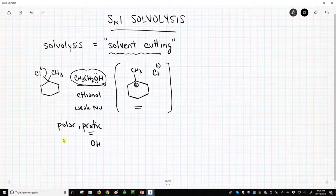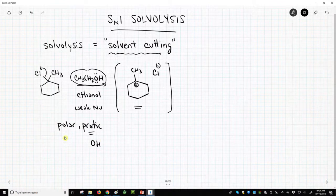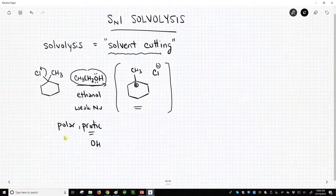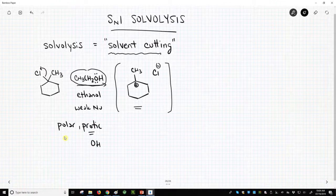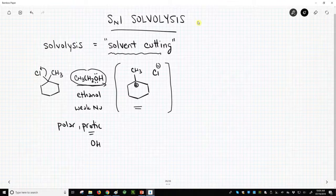and polar because we've got this electronegative oxygen. There's a lot of polarized bonds. There's a lot of unevenly distributed electron density in solvents like ethanol and methanol and water, and those are our common solvents for solvolytic processes.